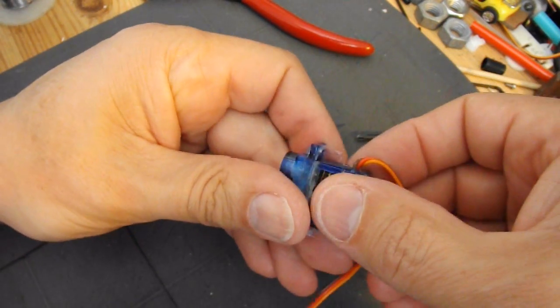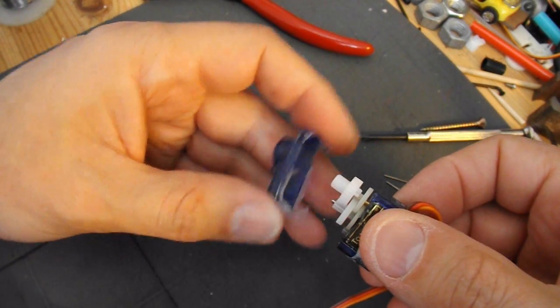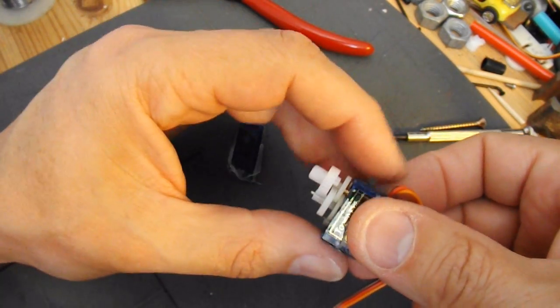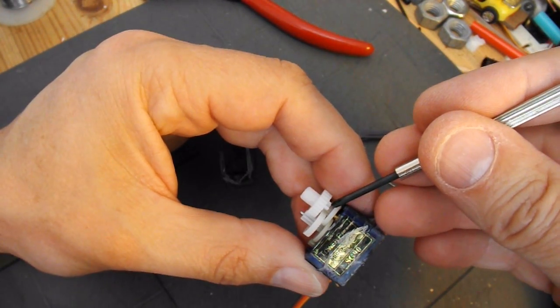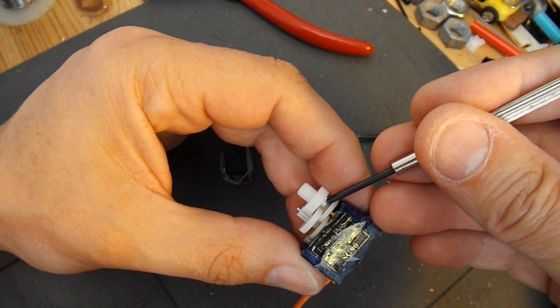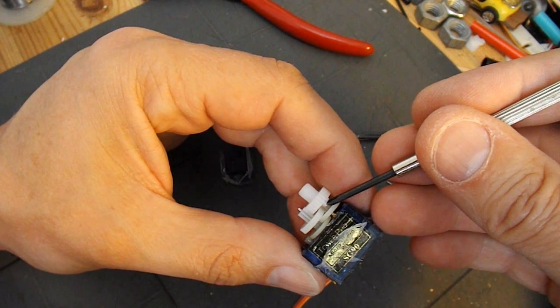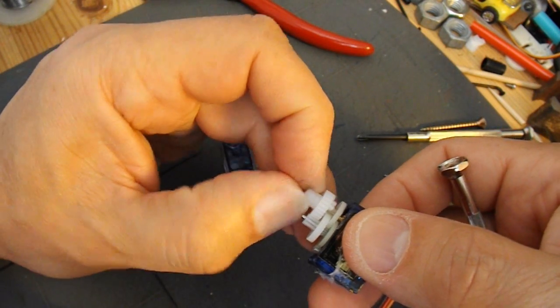So what we've got in the top end, we've got the gears. And just there, I'll do a close up in a second, is the mechanical stop, the little tag that sticks there and stops the servo turning full 360 degrees.